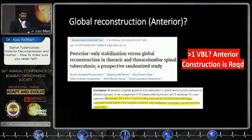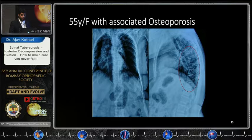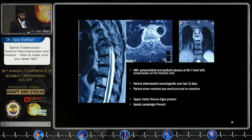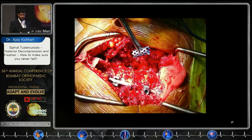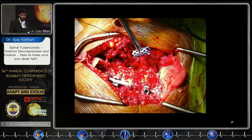What we normally call global reconstruction is anterior surgery through a posterior approach — this is a very strategic surgery. For example, a 55-year-old female with associated osteoporosis and severe cord compression: we performed transfacetal clearance and went anteriorly, managing to remove all the tubercular granulations, free the cord, and address extensive epidural adhesions.